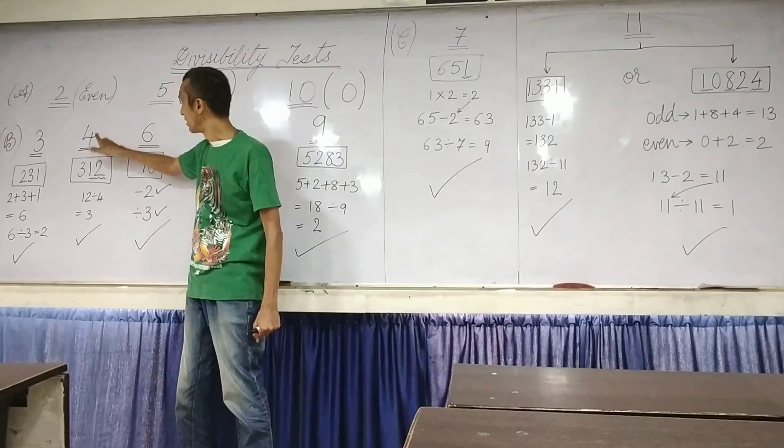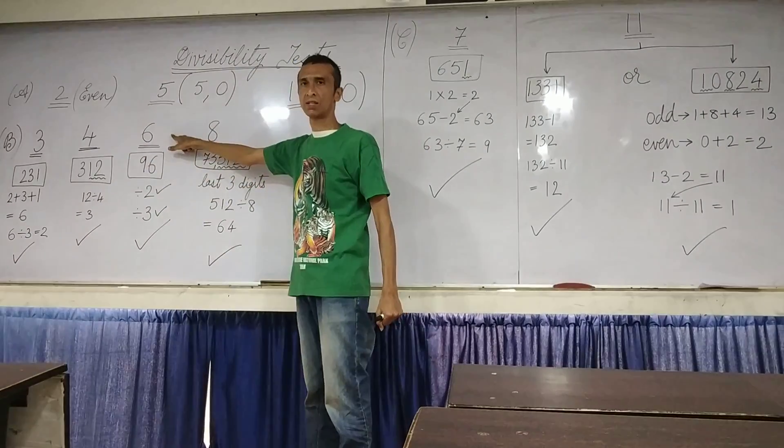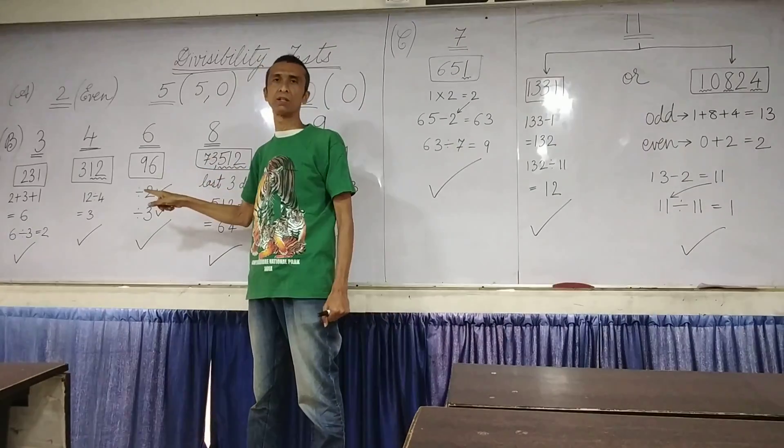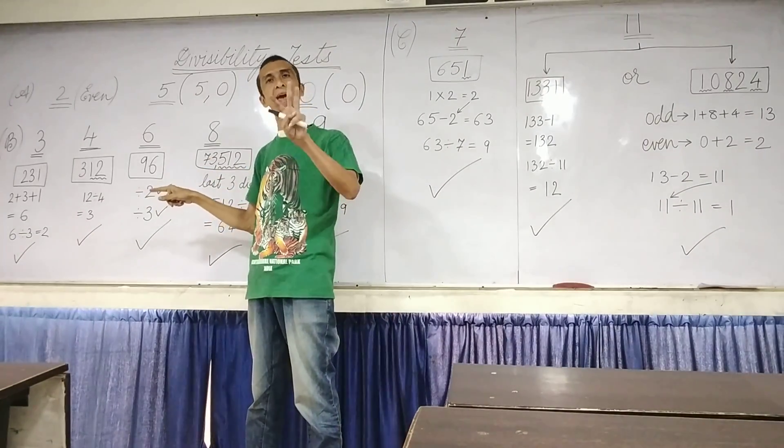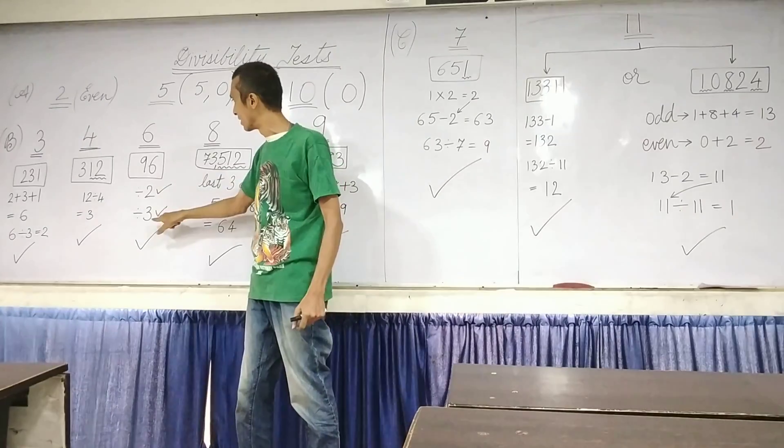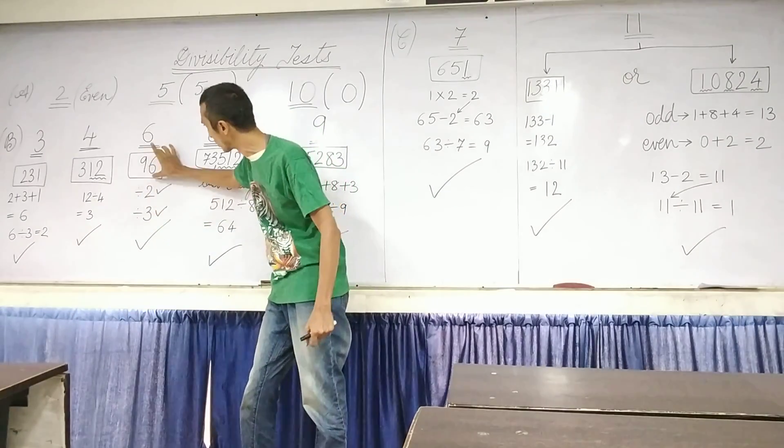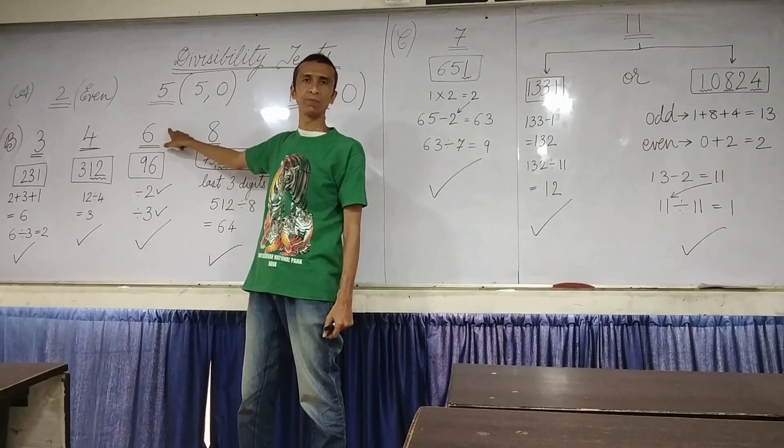Next is 6. In 6, you have to check the divisibility of 2 and 3. If this number is divisible by 2, yes it is, you get 48. If it is divisible by 3, yes, you get 32. So this number is also divisible by 6.